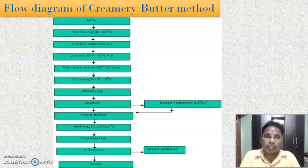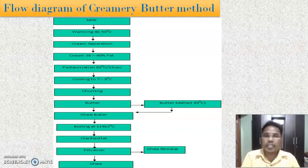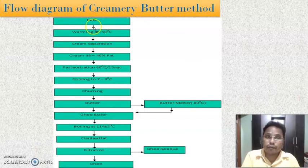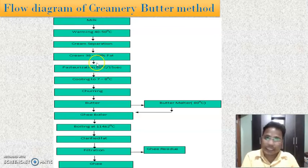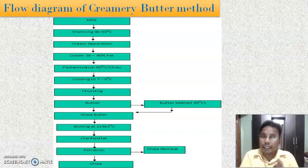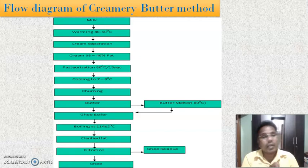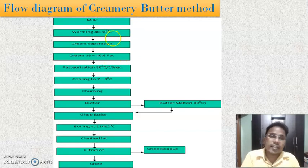Let's review each and every point given in the flow diagram. Good quality milk — sweet and clean — is taken, and the cream is separated from this milk by centrifugal cream separation. It is standardized to 38 to 40 percent fat. Standardization means the process of maintaining the desirable amount of fat and SNF content. The fat is standardized to 38 to 40 percent.